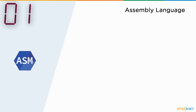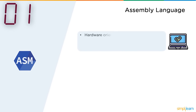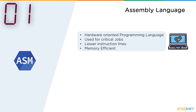Looking into the advantages assembly language provided: it was completely a hardware-oriented programming language used for critical jobs. It had very few instruction lines and was really memory efficient. Now let's look into the drawbacks that made it a completely obsolete programming language.